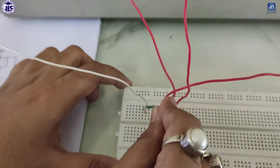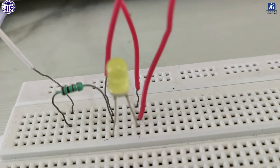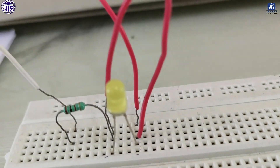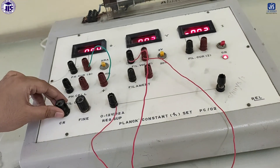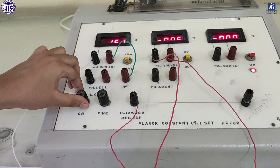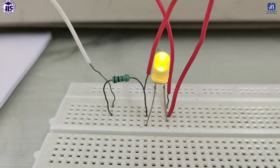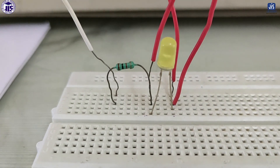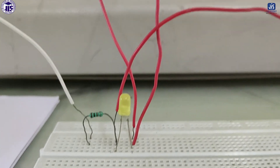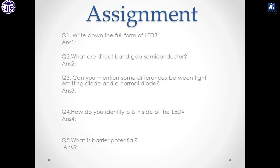We are switching off the instrument, then removing this red LED and putting in a yellow LED in its place. We are taking readings for the yellow LED — the process is the same. After some voltage it will start glowing, and you have to increase the voltage and take readings. When the yellow LED glows at maximum, switch off the instrument and remove the LED. This is the assignment for this experiment. That's all for today, thank you.